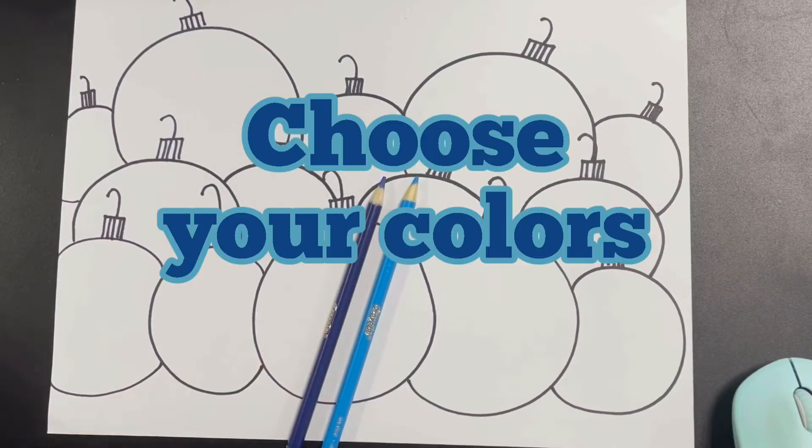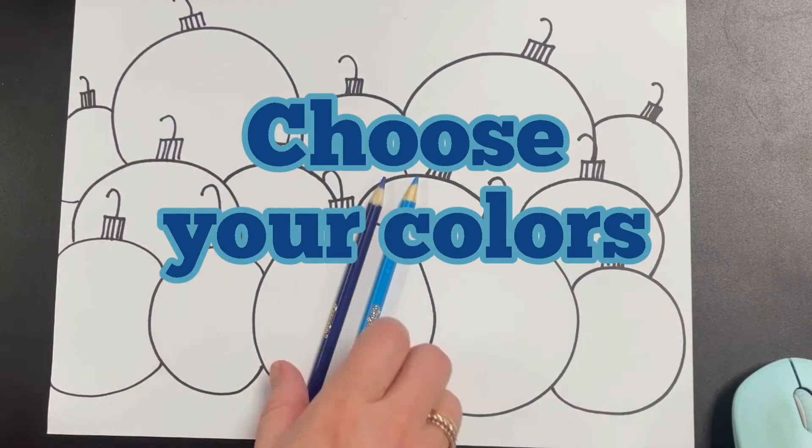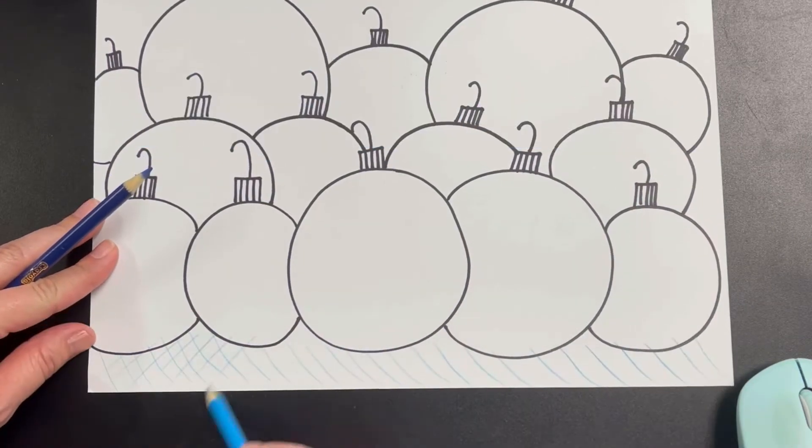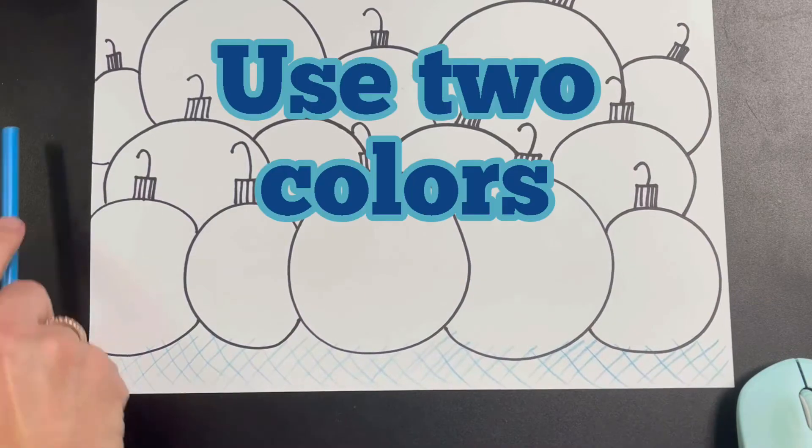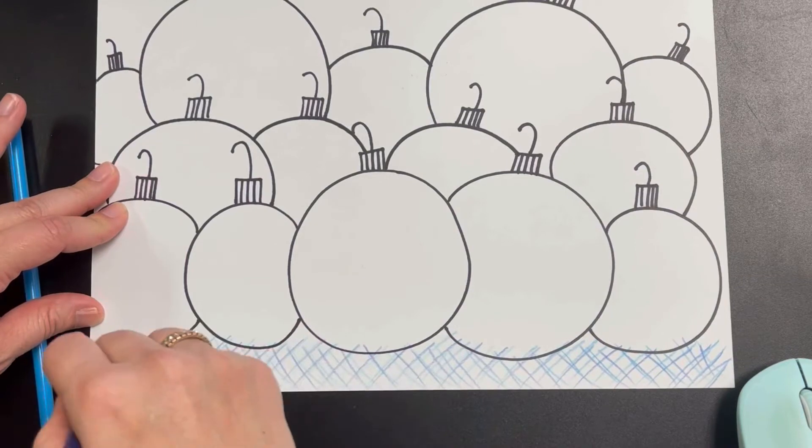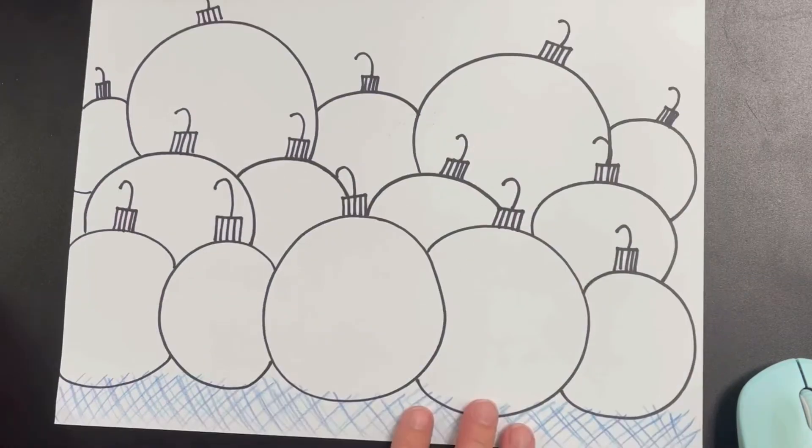Now it's time to color. Choose your colors to go with your holiday theme. I chose blue so I used two different colors of blue. Diagonal lines across the bottom with both colors going in opposite directions to give a soft textured feel.